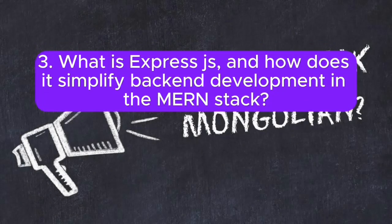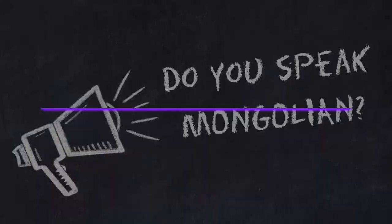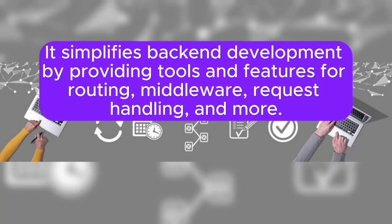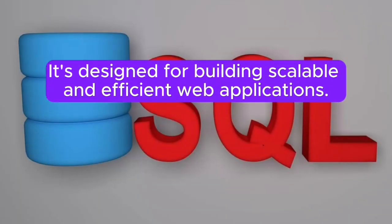3. What is Express.js and how does it simplify back-end development in the MERN stack? Answer: Express.js is a back-end web application framework for Node.js. It simplifies back-end development by providing tools and features for routing, middleware, request handling, and more. It's designed for building scalable and efficient web applications.